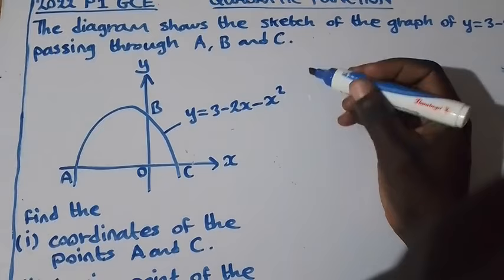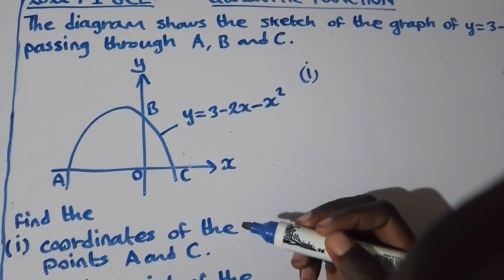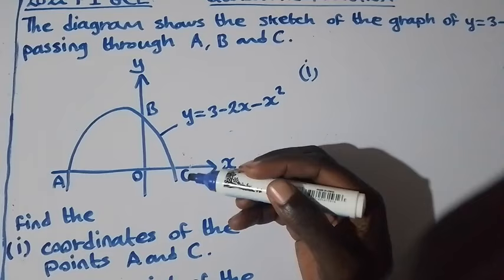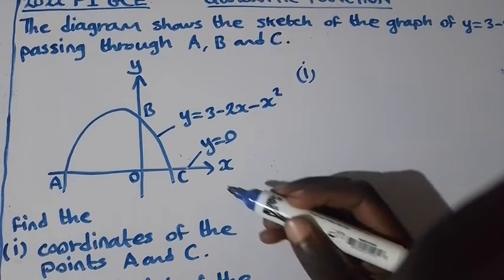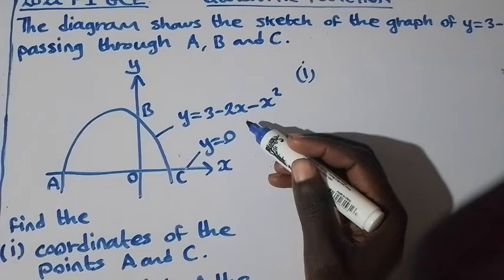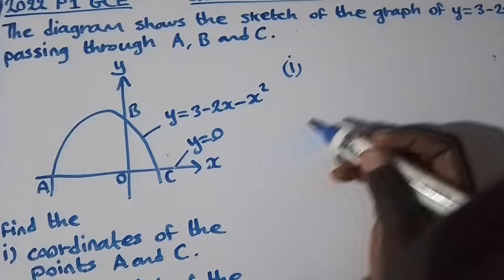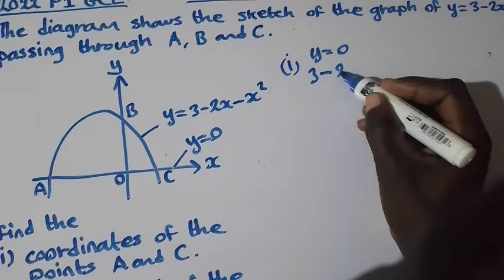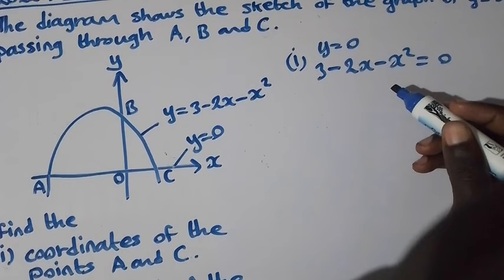To answer question 1, we need to find the coordinates of a and c. First we need to find the zeros of x — where the curve intersects the x-axis. We find the zeros by considering the x-axis as y = 0. We replace y with 0 in the quadratic function to convert it into a quadratic equation: 3 - 2x - x² = 0.